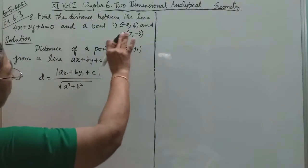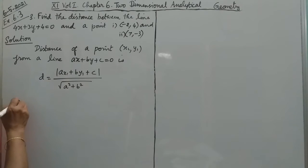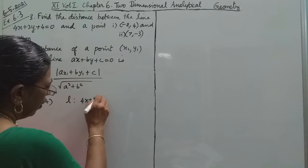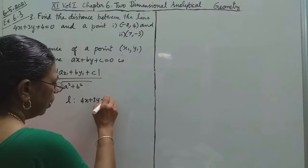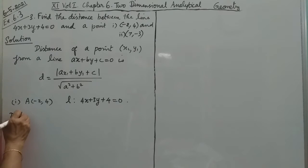Now for the first one, the point is (-2, 4) and the line is 4x plus 3y plus 4 equals 0. Now let's find the distance between them.